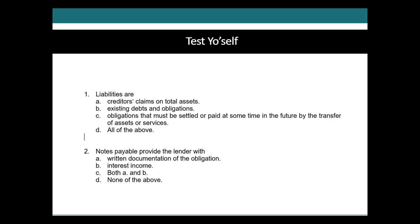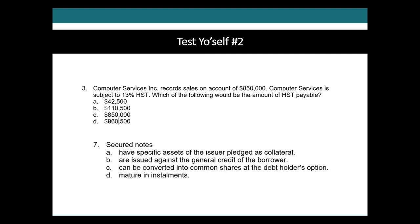Let's test yourself — there's going to be some multiple choice on your final exam and your next mini test, so let's practice. Question one: if you said D, all of the above, you are correct. Liabilities are a creditor's claim on total assets, existing debts and obligations, and obligations that must be paid or settled at some time in the future by some sort of assets or services. Question two: if you said both A and B, you are correct — notes payable are often supported with written documentation and come with interest.